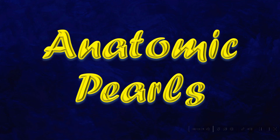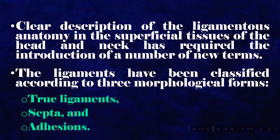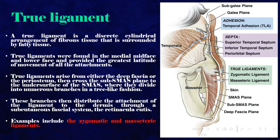The ligaments have been classified according to three morphological forms: true ligaments, septa, and adhesions. A true ligament is a discrete cylindrical arrangement of fibrous tissue surrounded by fatty tissue. True ligaments were found in the medial midface and lower face and provided the greatest latitude of movement. They arise from either the deep fascia or the periosteum, then cross the sub-SMAS plane to the undersurface of the SMAS, where they divide into numerous branches in a tree-like fashion. These branches distribute the attachment of the ligament to the dermis through the retinacula cutis. Examples include the zygomatic and masseteric ligaments.